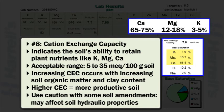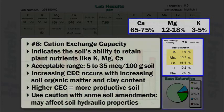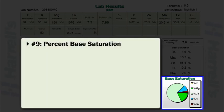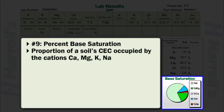Caution, however, should be used when incorporating some soil amendments as they may undesirably affect soil hydraulic properties such as saturated hydraulic conductivity. The percent base saturation refers to the proportion of a soil's cation exchange capacity occupied by the cations calcium, magnesium, potassium, and sodium.